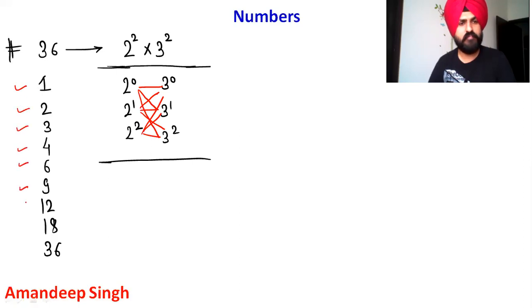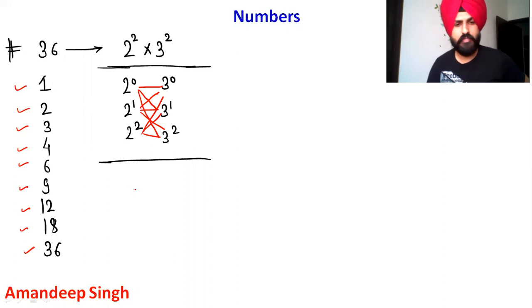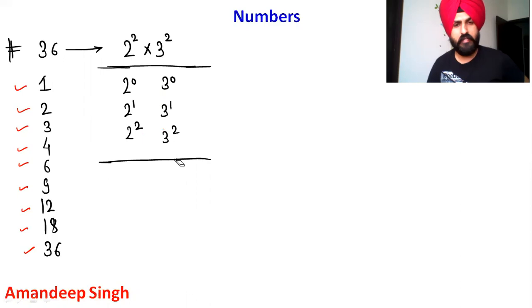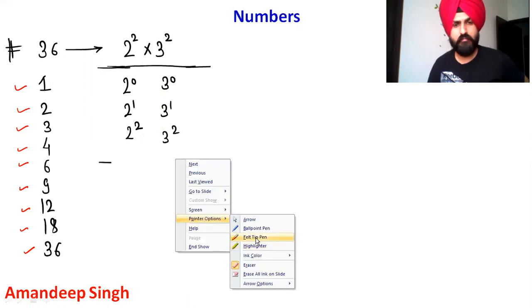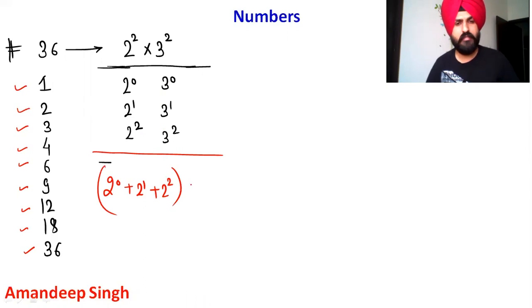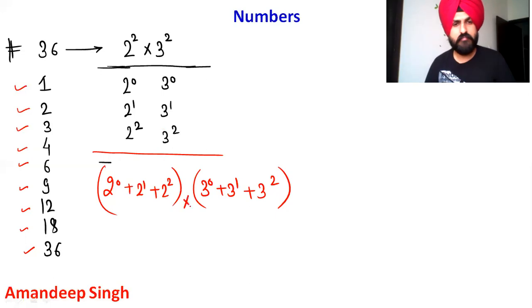Now I have to find the sum. To find the sum, take 2⁰, 2¹, and 2² — all available powers — add them together to make the first factor bracket. In the second bracket, take 3⁰, 3¹, and 3². When you multiply these two brackets together, you will get your sum of all factors.